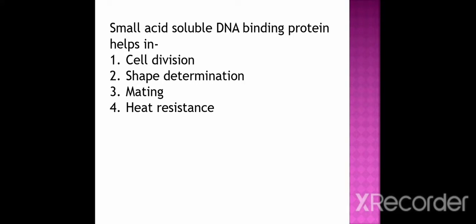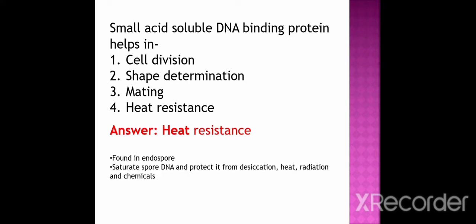Small acid-soluble DNA-binding proteins (SASPs) help in — option 1 cell division, option 2 shape determination, option 3 mating, option 4 heat resistance. The correct option is heat resistance. These small acid-soluble DNA-binding proteins are found in the endospore. They saturate spore DNA and protect it from desiccation, heat, radiation, and chemicals.